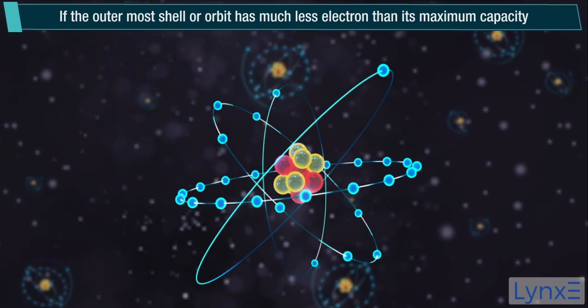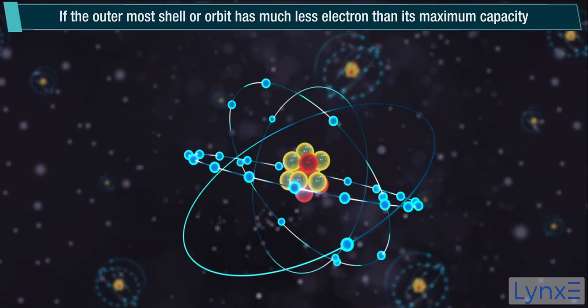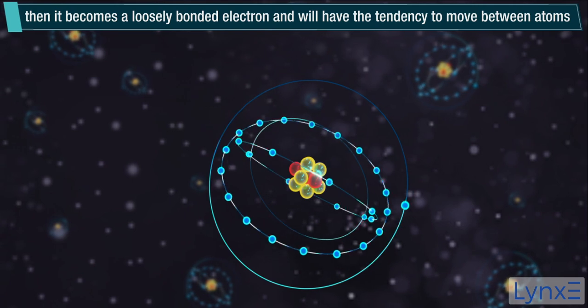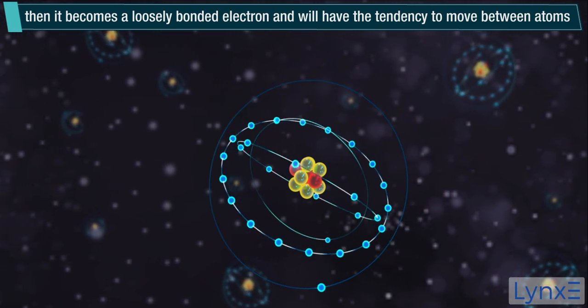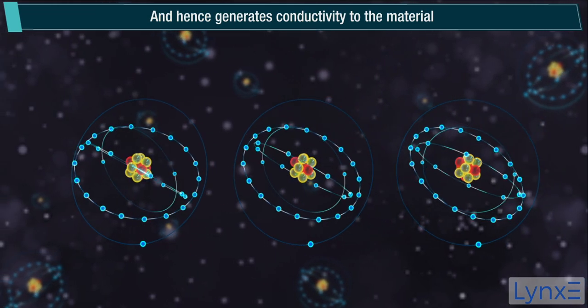If the outermost shell or orbit has much less electron than its maximum capacity, then it becomes a loosely bonded electron and will have the tendency to move between atoms and hence generates conductivity to the material.